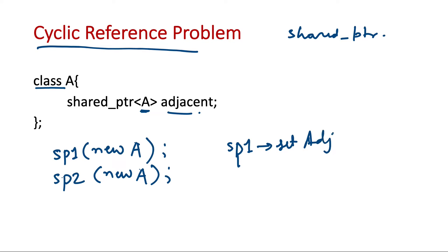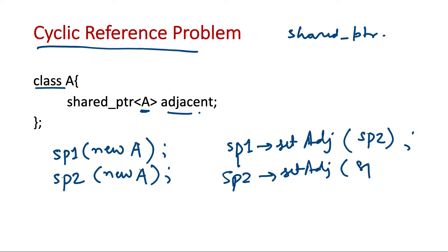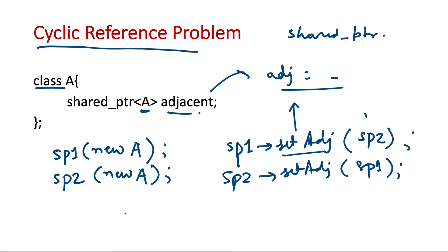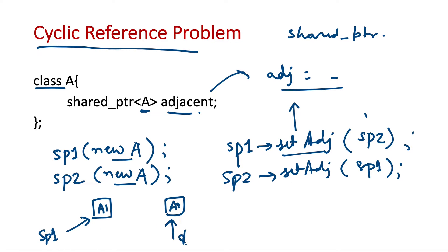We call sp1.set_adjacent() and pass sp2, and similarly sp2.set_adjacent() and pass sp1. The set_adjacent() function simply assigns its argument to the member shared pointer adjacent. Now we have two objects of type A — call them A1 and A2 — where sp1 owns A1 and sp2 owns A2.